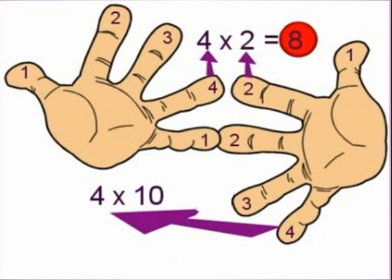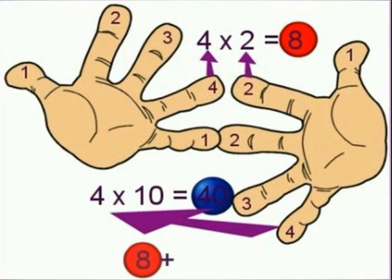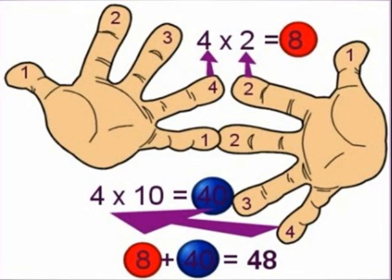We now add those two answers together, shown here in the red circle and the blue circle. Eight plus forty equals forty-eight. So 6 times 8 is 48.